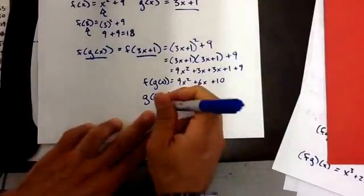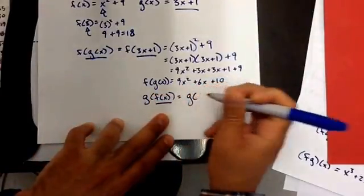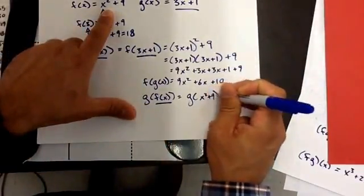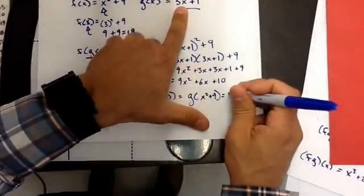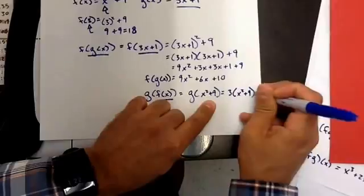So for this one, I'm going to take whatever f(x) is, and I'm going to plug it in. So g(f(x)) is the same thing as g of (x squared plus 9). g(x) is right here. So 3 parentheses, x squared plus 9, plus 1.